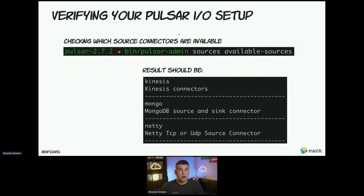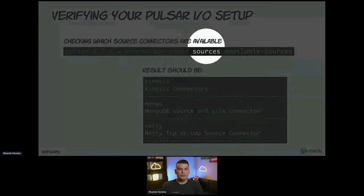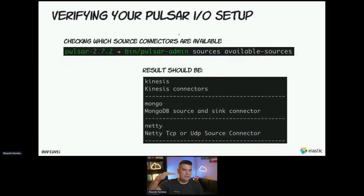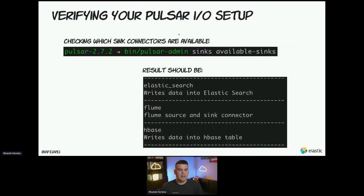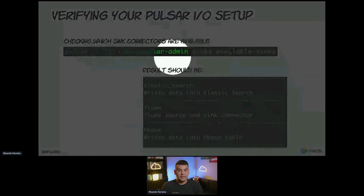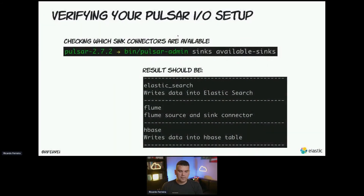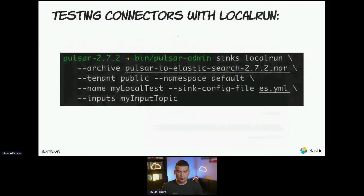Regardless of whether you're using the Pulsar-all Docker image or manually installing connectors, to ensure the function worker and broker are loading them up, you can call the CLI: `pulsar-admin sources available-sources`. This gives you a list of all connectors the broker or function worker was able to load. It's a handy way to check if something is off — for example, if you expected three connectors but only two are listed. The same goes for sinks: `pulsar-admin sinks available-sinks`.